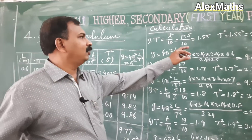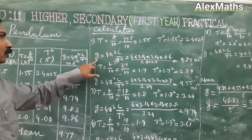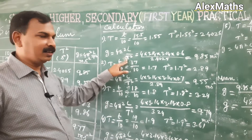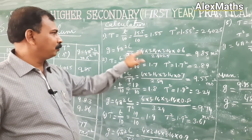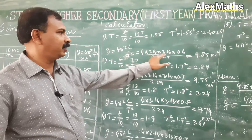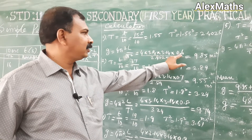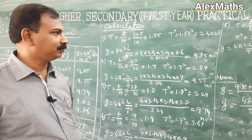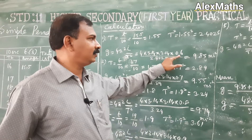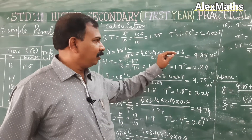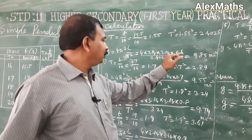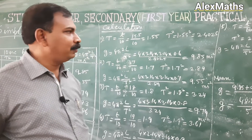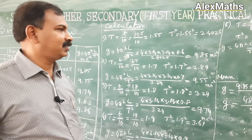Now for the main calculation: g = 4π²l / T². Substitute the values: 4 × 3.14 × 3.14 × l, where l = 0.6 m (60 centimeters converted to meters), divided by T² = 2.4025. Multiply the numerator and divide by the denominator — using a calculator you get g = 9.85 m/s².